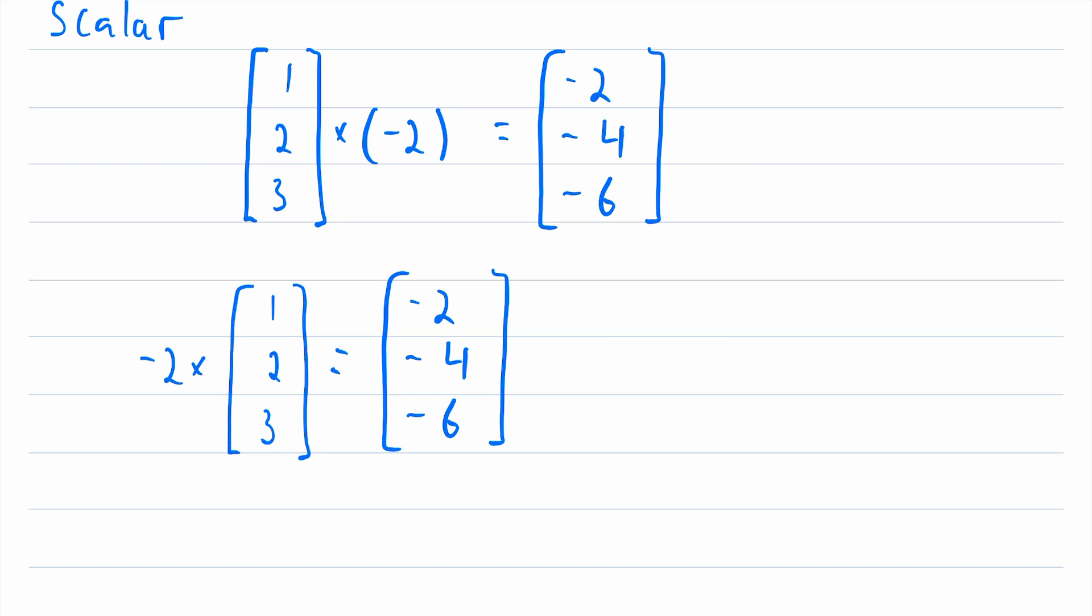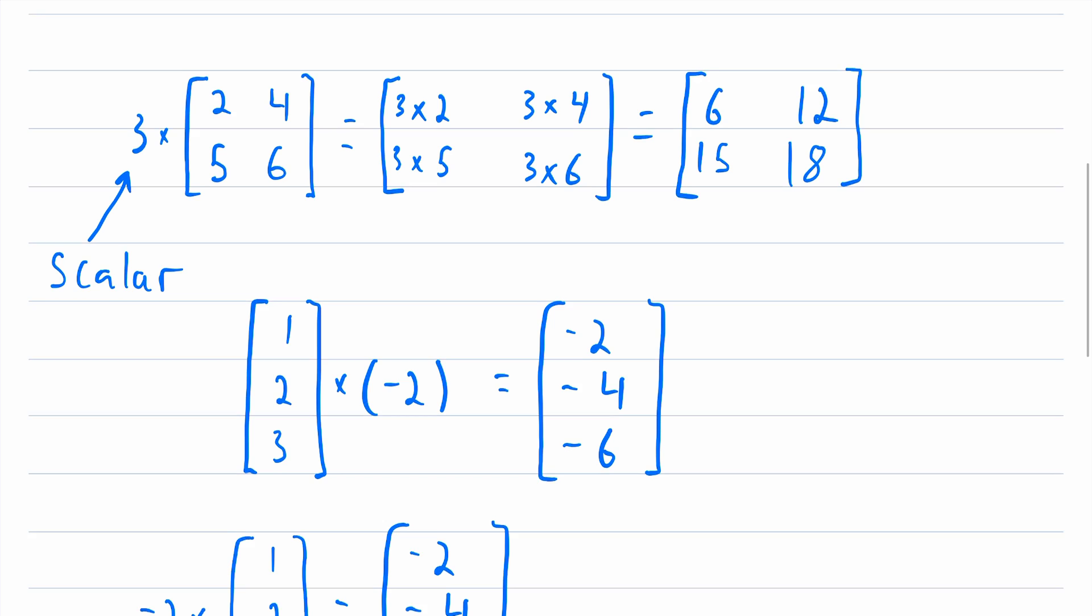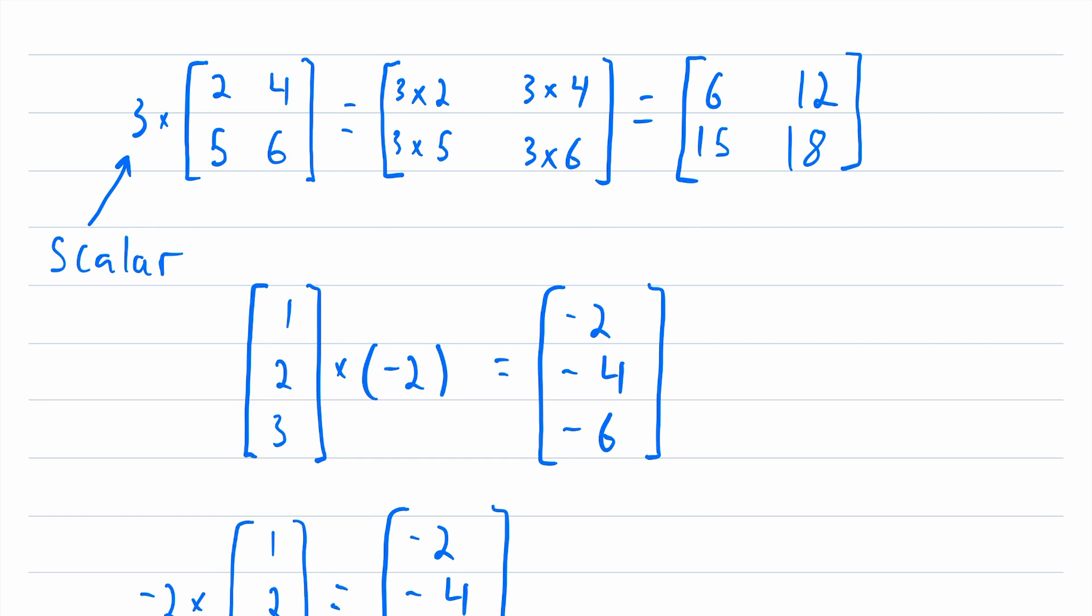So that's how scalar multiplication with matrices works, you can multiply a matrix of any dimensions by a scalar. And to carry out the operation of multiplying a matrix by a scalar, all you have to do is multiply each entry in the matrix by that scalar. And remember that when we're talking about matrices that contain real numbers, a scalar is just a real number. So I hope this video helped you understand scalar multiplication of matrices.